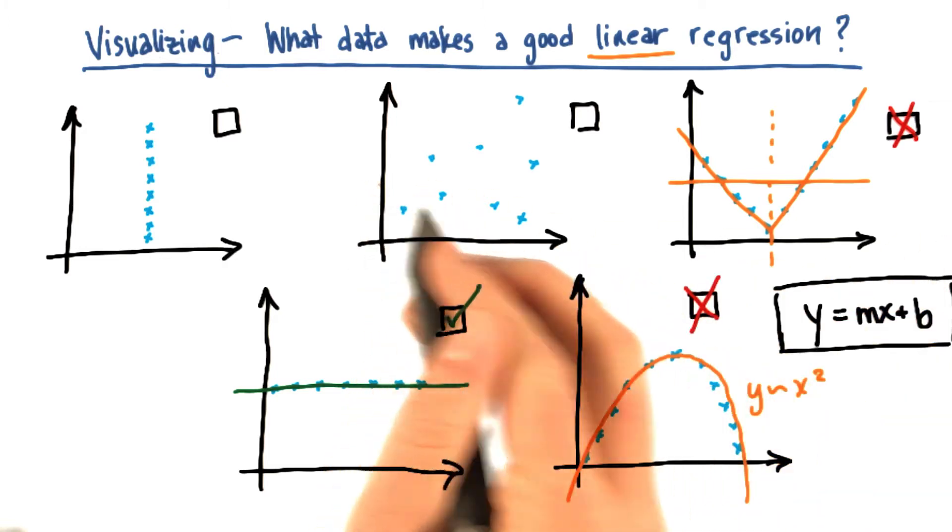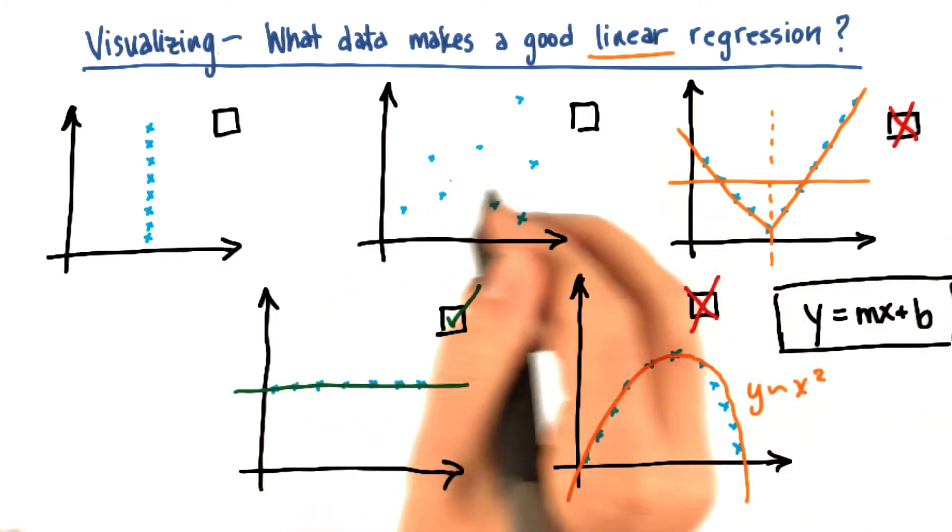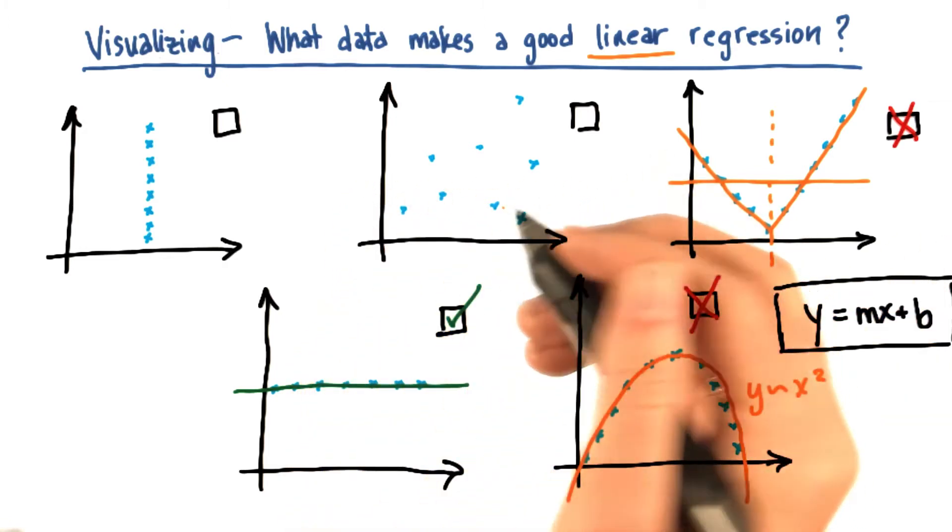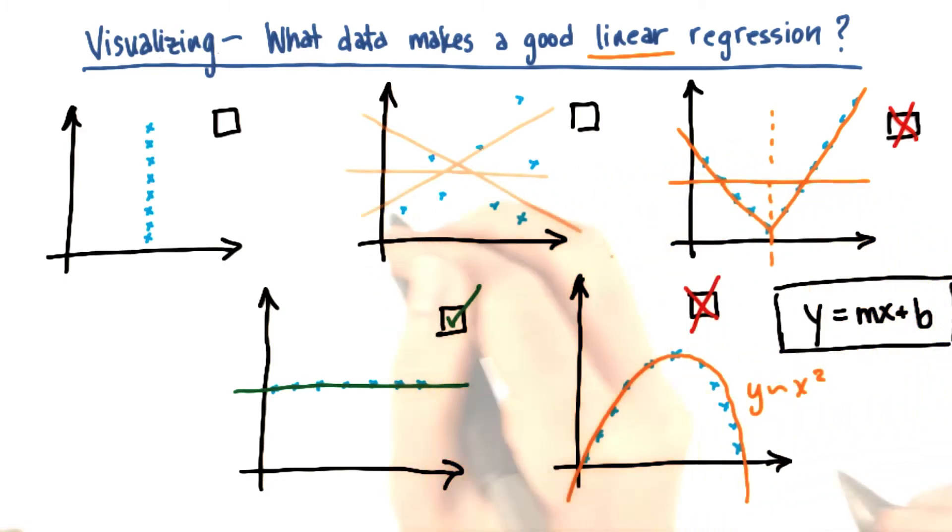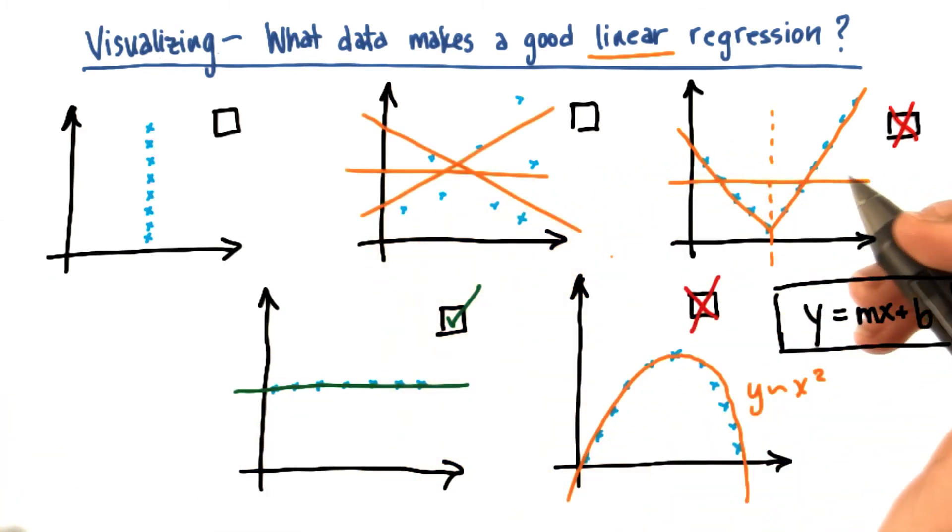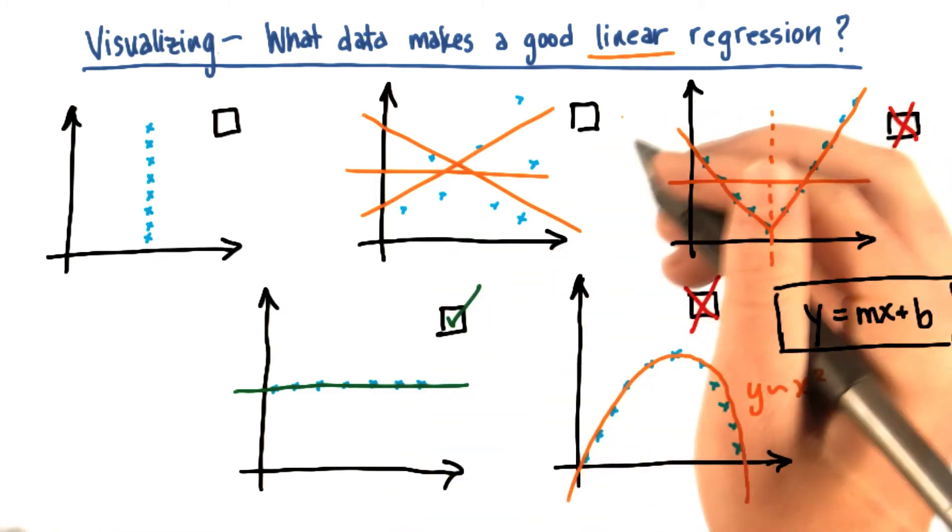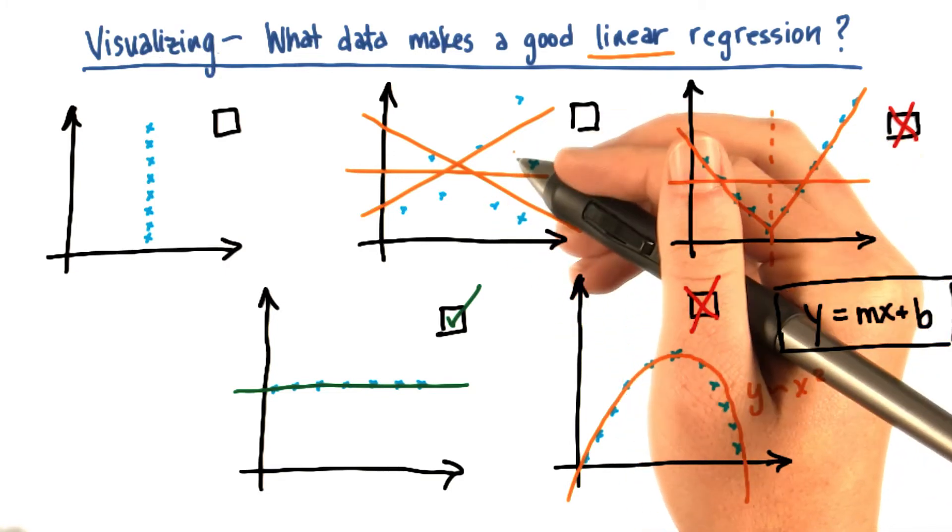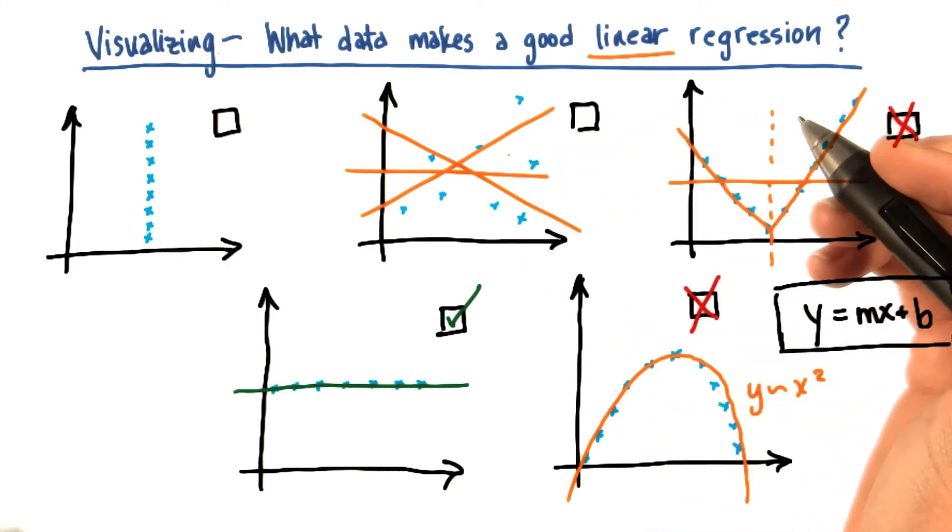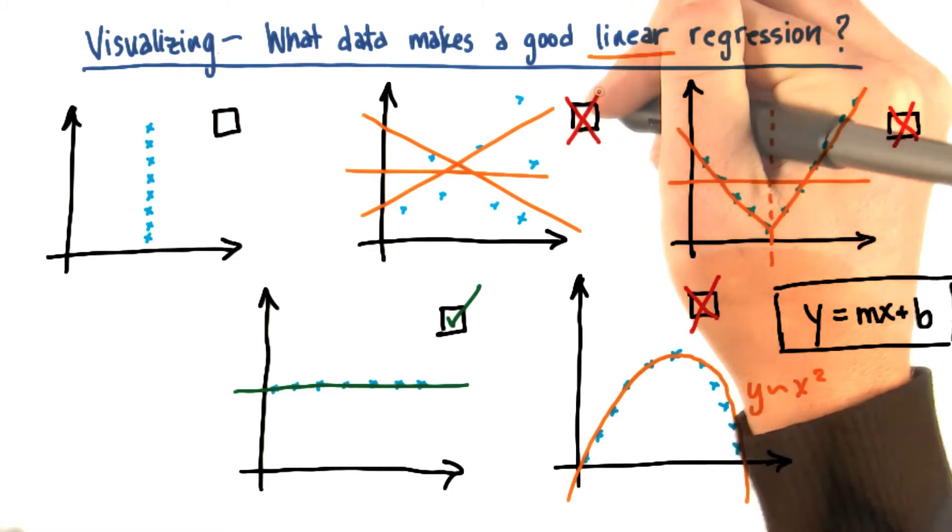Next, let's do the data set in the top middle here. The problem here is just that the data is all over the place. There doesn't seem to be a very strong pattern. So there's lots of different lines that might all have very similar r squareds or sum of squared errors. They could all look very different. And in this case, it's hard to say that any of these lines is really describing a pattern in the data very well. So I would say that this is not a particularly good candidate.